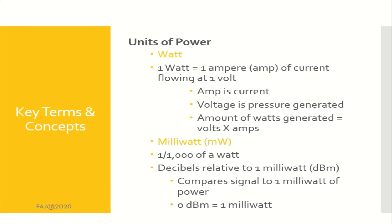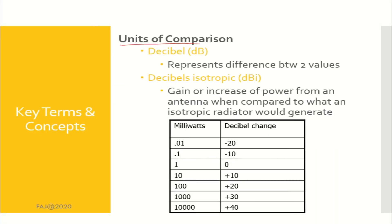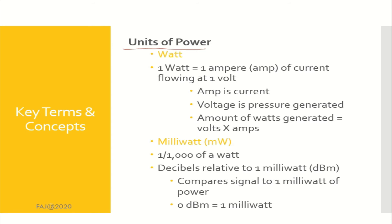For radio frequency measurement, you just need to know units of power and units of comparison. Under units of power, there are watt and milliwatt. One watt is equal to one ampere of current flowing at one volt. A milliwatt is one over one thousand of a watt.